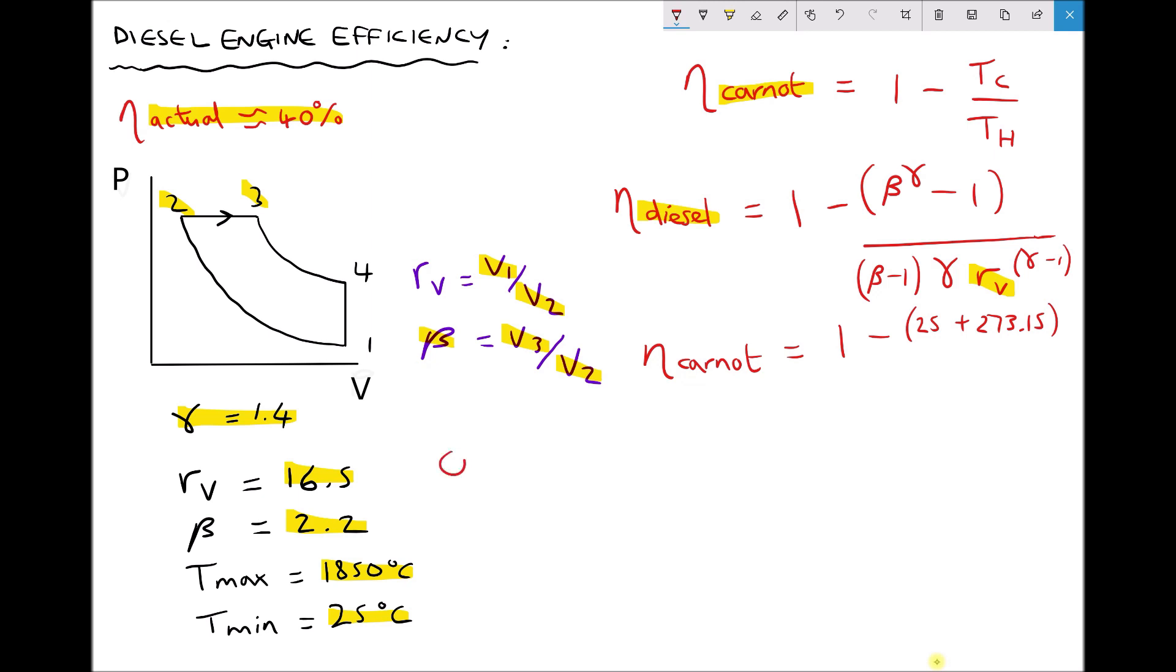Recall that 0 degrees C is equivalent to 273.15 Kelvin. So our conversion is to add 273.15.